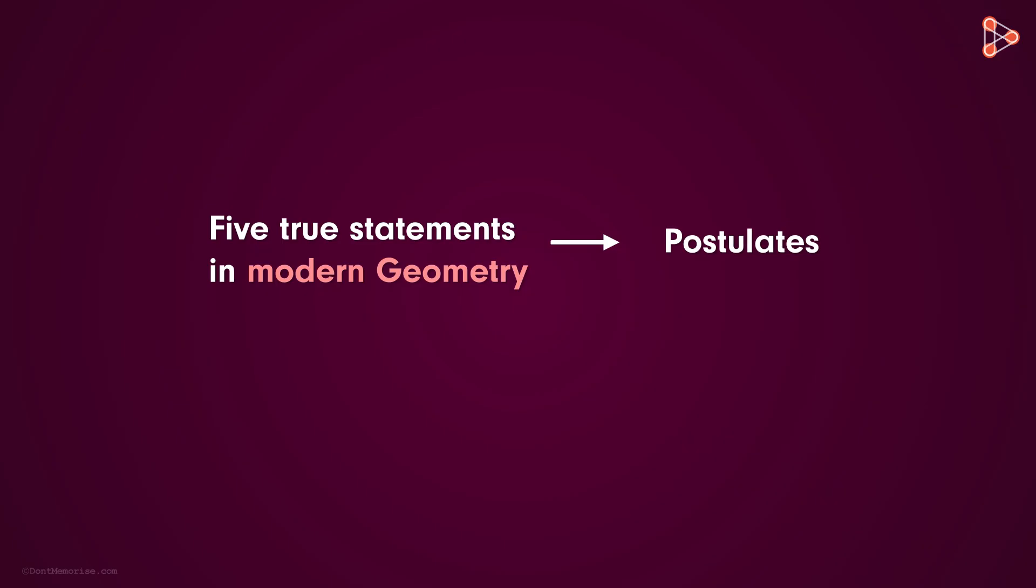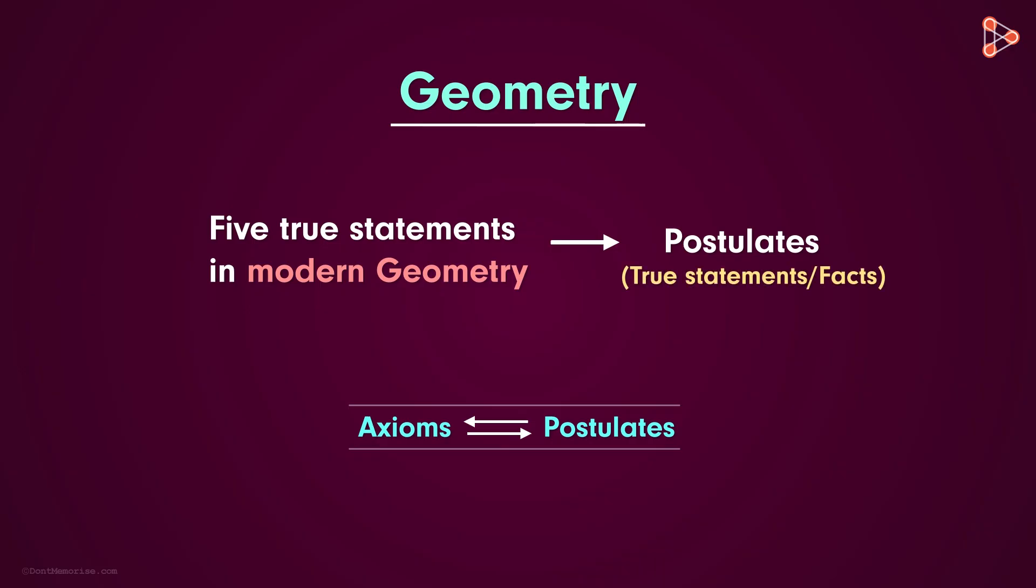You would be wondering what the difference between axioms and postulates is? Well, in geometry, they are essentially interchangeable. The general meaning of postulate is a true statement. But in the case of Euclid, a postulate is a true statement or rather a fact that is applicable in geometry only.